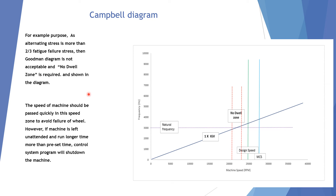If the Goodman diagram is not acceptable, the no-dual zone is required, and its width depends on the manufacturer's margin around the point of intersection or interference. The machine should pass quickly through these two zone boundaries to avoid failure. If the machine runs unattended for longer than the allowable or preset time within this zone, the control system program will shut down the machine to avoid damage.